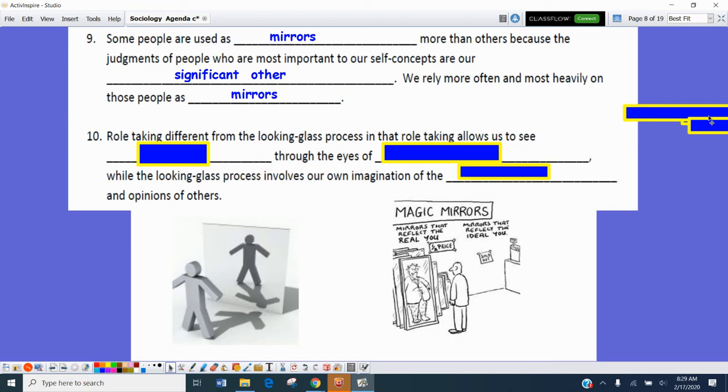When we talk about role taking, role taking is different from the looking glass process in that role taking allows us to see ourselves through the eyes of someone else, while the looking glass process involves our own imagination of the perceptions and opinions of others.